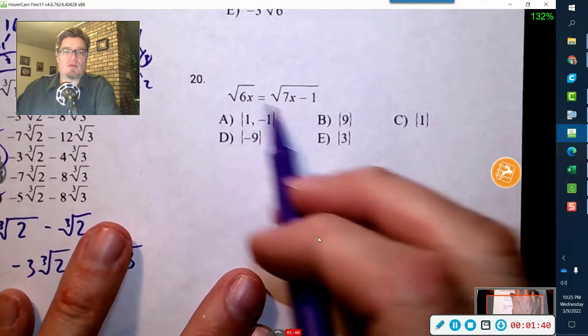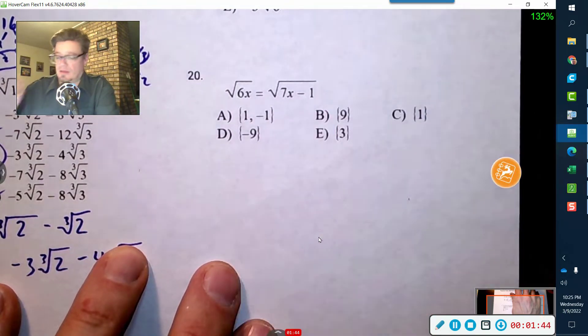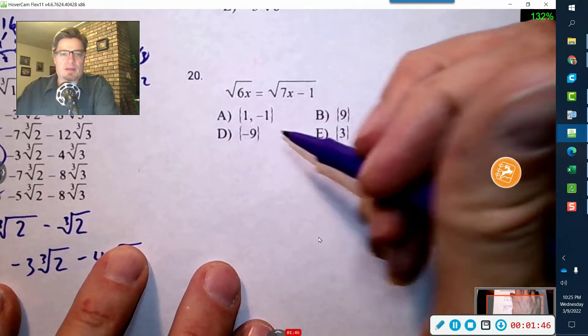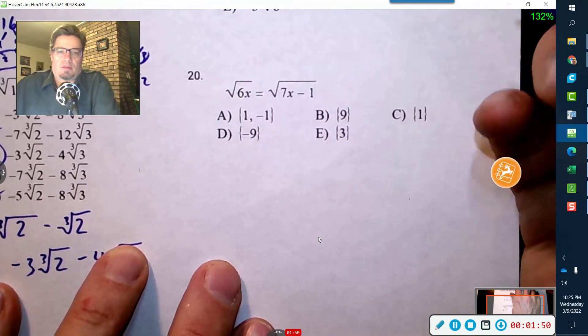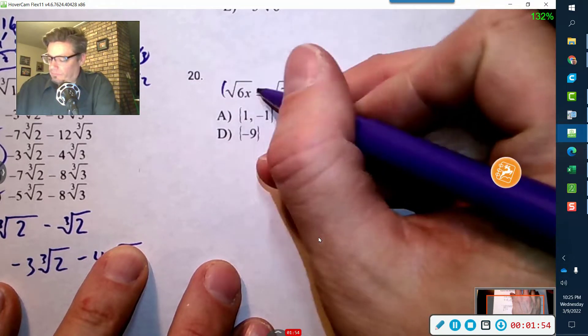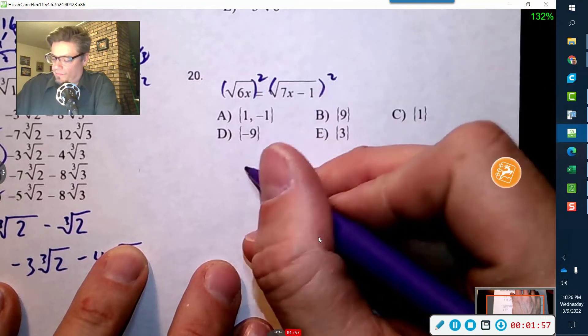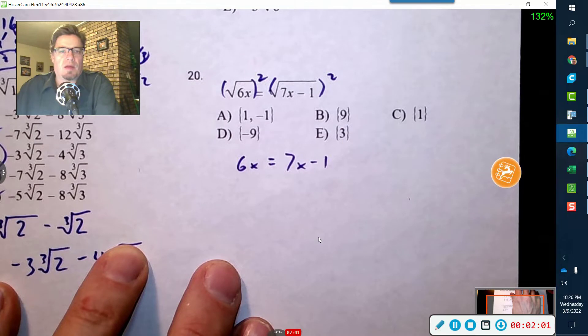All right, when you have two radicals equaling each other, this is the best case scenario. Because I mean, you know, back in the eighth grade you would have never thought you would see this and you would have thought, oh, I don't know what to do. But square sides, you just jumped three grade levels just by in one step.